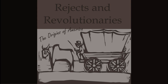In 1620, an English explorer in Africa declined the offer to trade in slaves by saying that we are a people who did not deal in any such commodities, neither did we buy or sell one another or any that had our own shapes. By 1660, though, slavery was an established practice in English America.